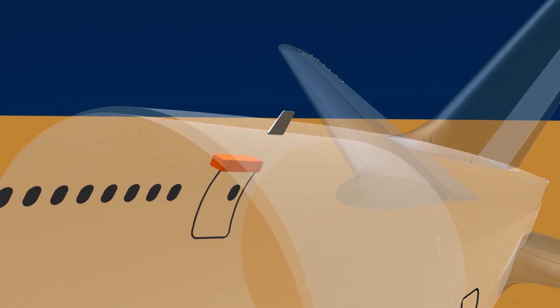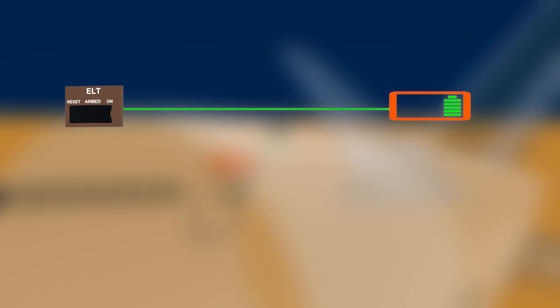The beacon is in the aft part of the aircraft and is connected to an antenna. It can be turned on manually using the switch in the cockpit, but a crash can result in connection breakage or loss of electrical power, rendering the switch useless.